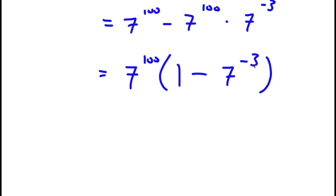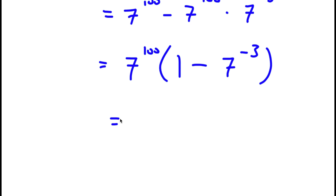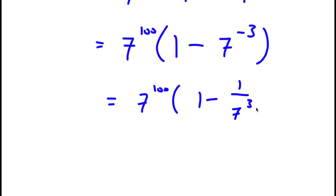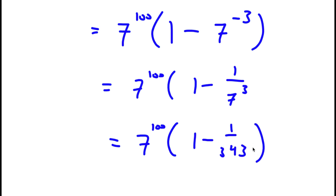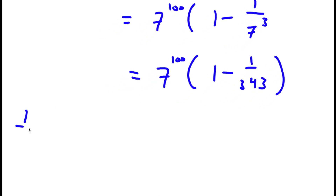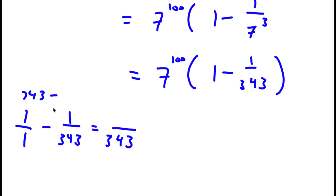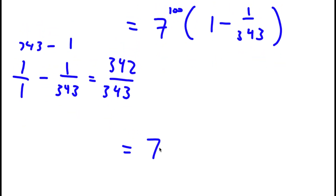Now, 7 to the power of negative 3 is the same thing as 1 over 7 to the power of positive 3, and 7 to the power of positive 3 is 343. So now I have 7 to the power of 100 times 1 minus 1 over 343. Now 1 minus 1 over 343: 1 times 343 is 343, minus 1 gives 342 over 343. So I have 7 to the power of 100 times 342 over 343. So this is another solution.